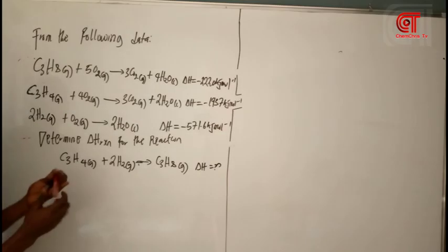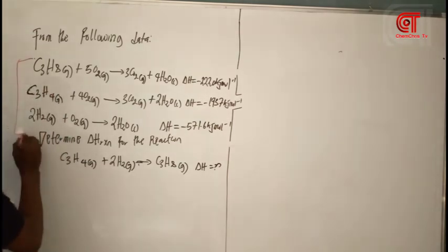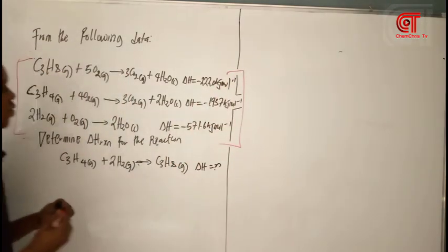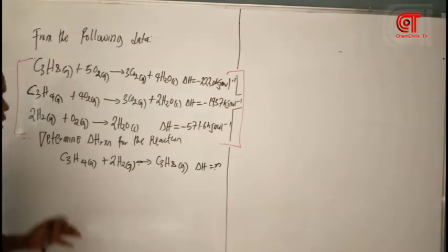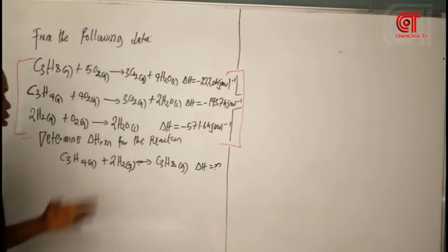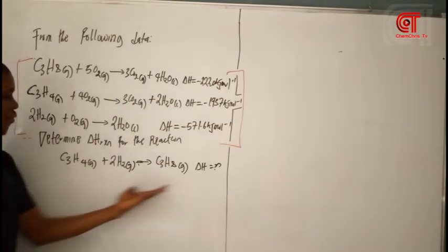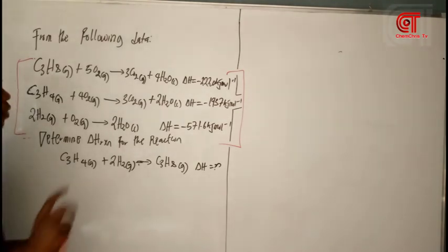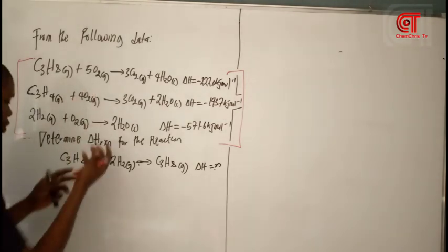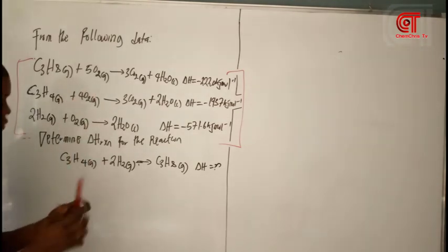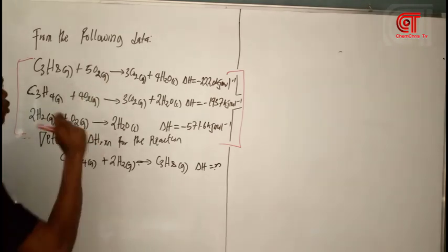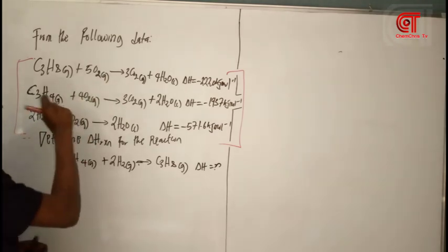Let's take the last example. We will be given all these equations here. We need to calculate the enthalpy for this particular reaction. So I'm going to follow the same three rules. The first thing to do is to circle the species that are unique to a particular reaction.